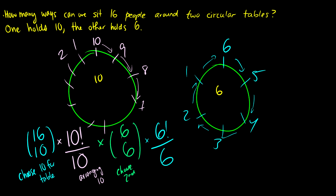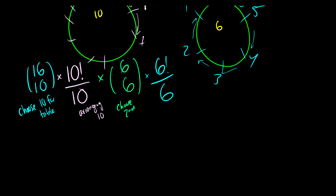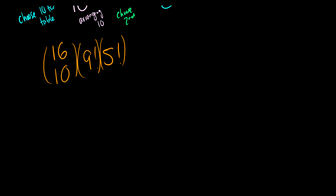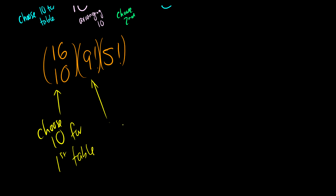So our end result is: 16 choose 10 times 10 factorial over 10 times 6 choose 6 times 6 factorial over 6. Simplifying: 6 choose 6 is 1, so this becomes 16 choose 10 times 9 factorial times 5 factorial. In words: first we choose 10 for the first table, then we order those 10, and then we order the remaining 6.